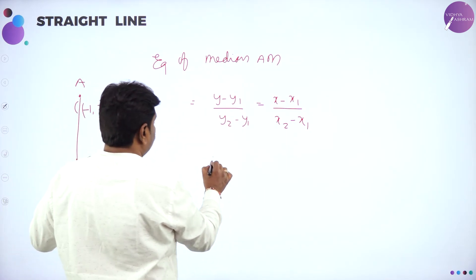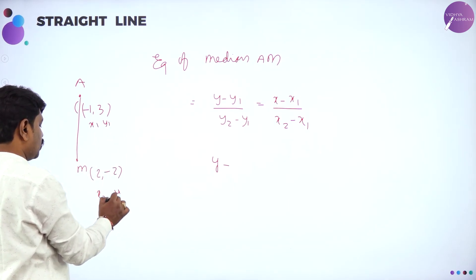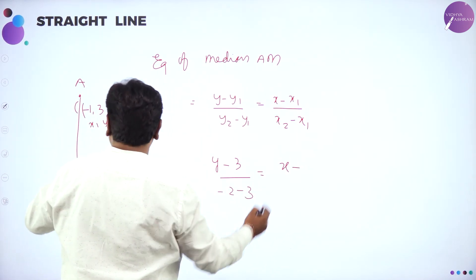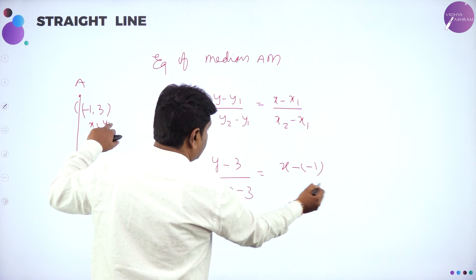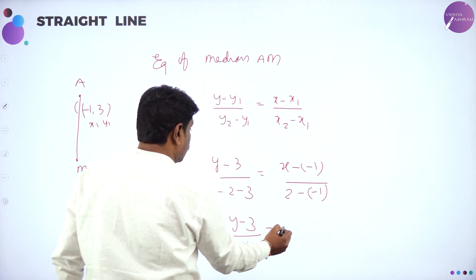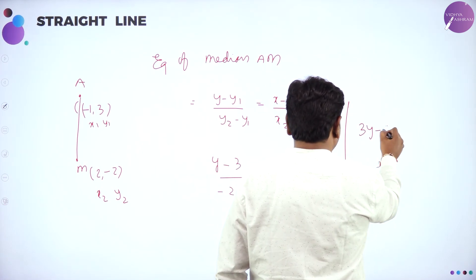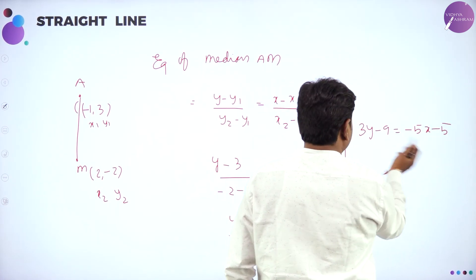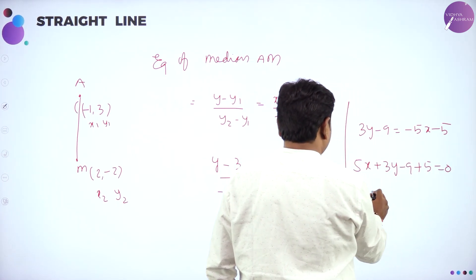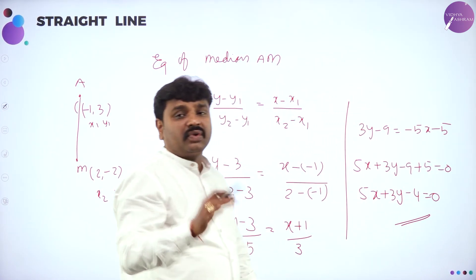Substituting into the two-point form: (Y minus 3) divided by (minus 2 minus 3) equals (X minus minus 1) divided by (2 minus minus 1), giving (Y minus 3) divided by minus 5 equals (X plus 1) divided by 3. Cross-multiplying: 3Y minus 9 equals minus 5X minus 5. Rearranging: 5X plus 3Y minus 4 equals 0. This is the equation of median AM.